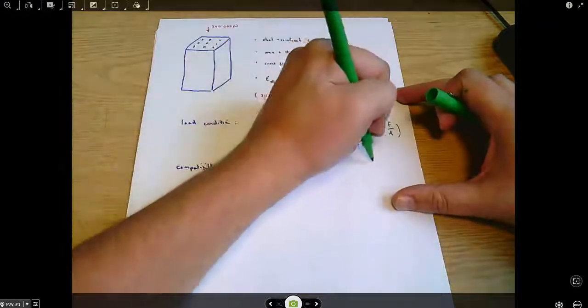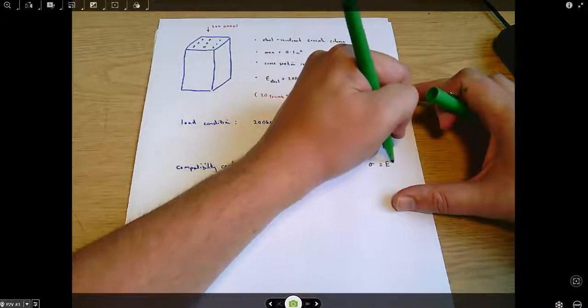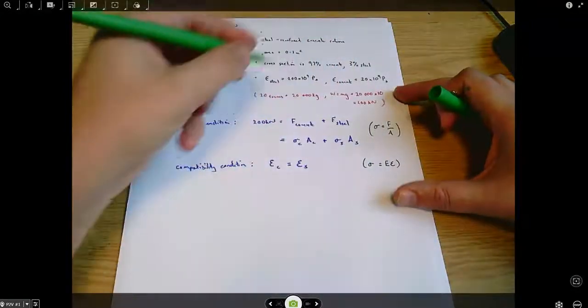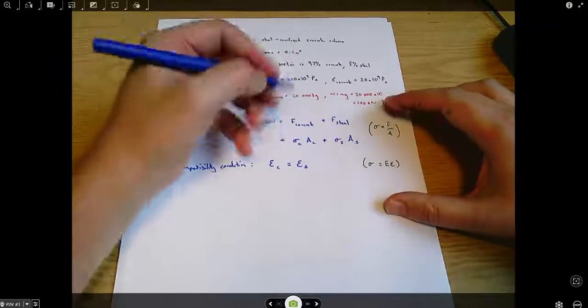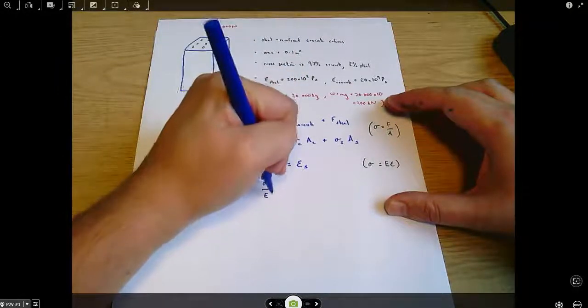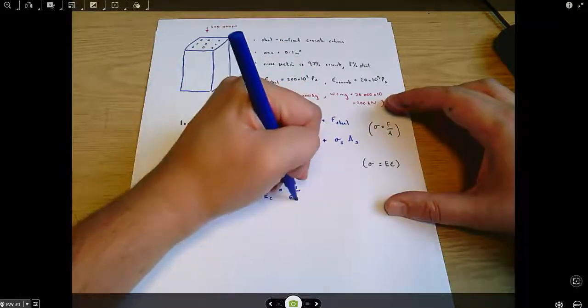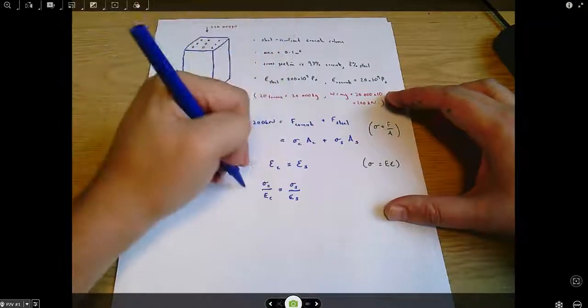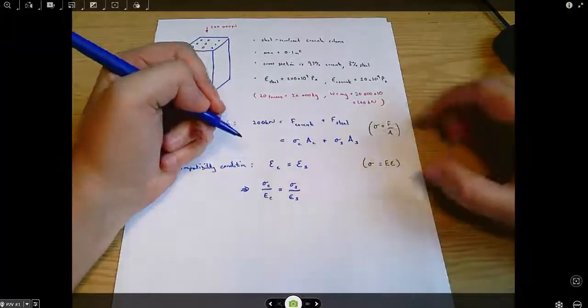Here we're going to use the relationship between stress and strain, which of course uses Young's modulus. And I can say then that the stress in the concrete divided by the Young's modulus of concrete equals the stress in the steel divided by the Young's modulus of steel. That's substituting this definition into that compatibility condition.